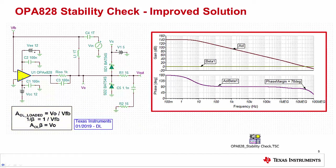Shown on the right are the simulation results for the stability test. The key takeaway from the simulation is the point at which the AOL and 1 over beta curve intersect. At this point, we identify the phase margin on the AOL times beta curve. This design has 70 degrees of phase margin, which indicates that the circuit is very stable. Generally, if the circuit has more than 45 degrees of phase margin, it is considered to be stable.